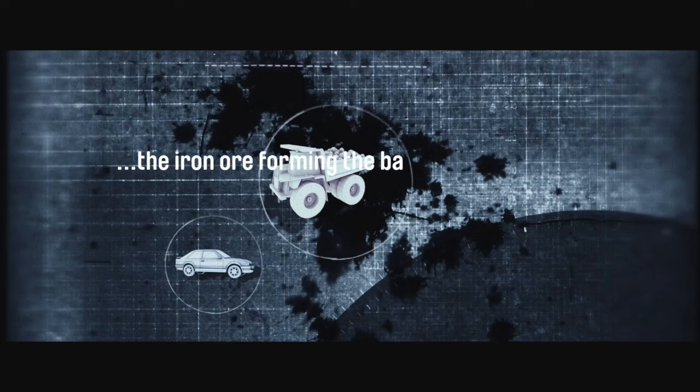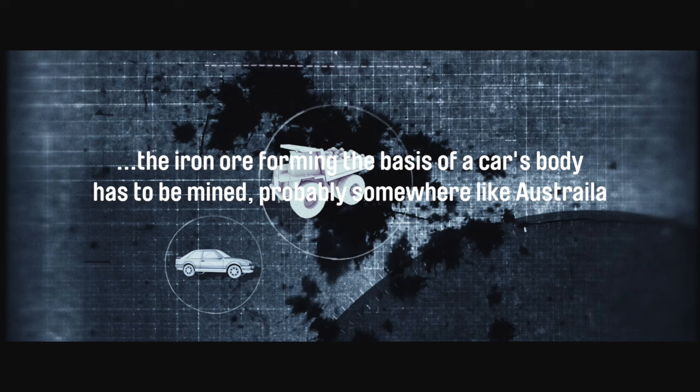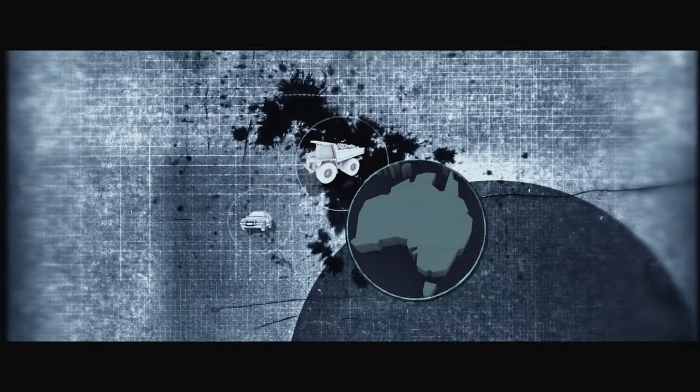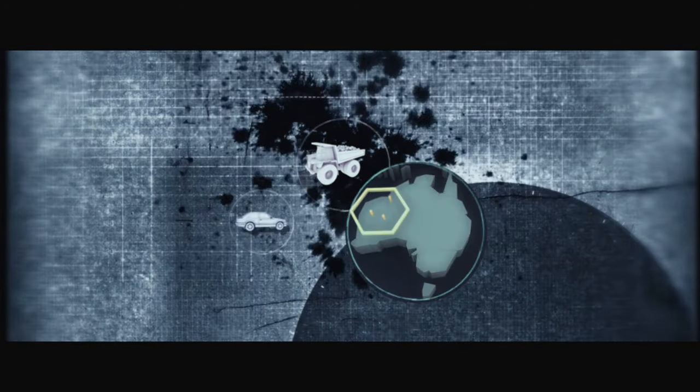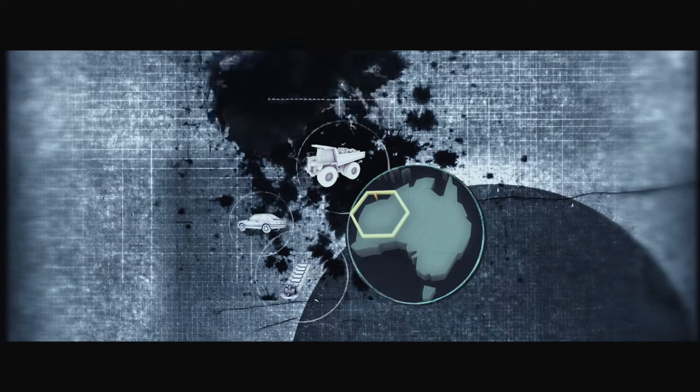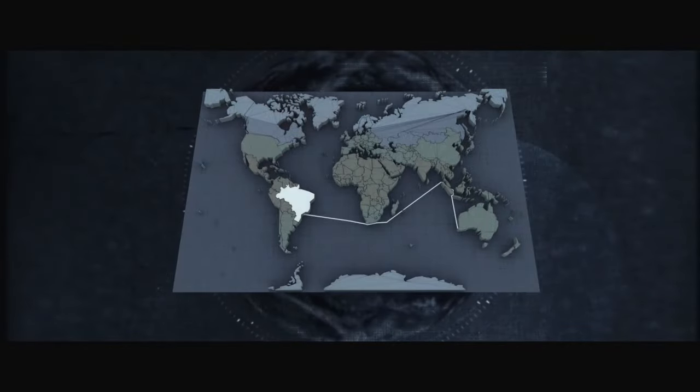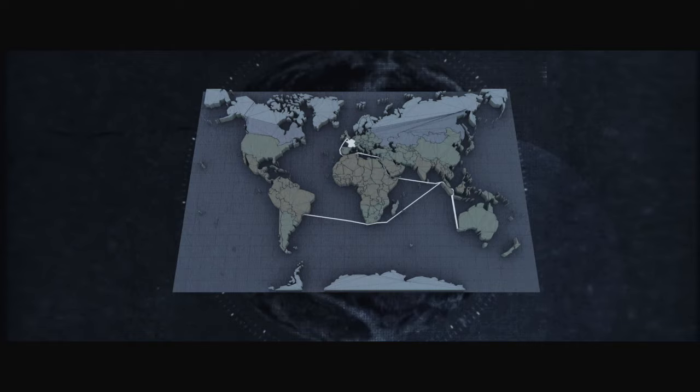The iron ore forming the basis of a car's body has to be mined, probably somewhere like Australia. It's then transported on a very large, very polluting ship to somewhere like Brazil, Indonesia, or France to be made into steel.